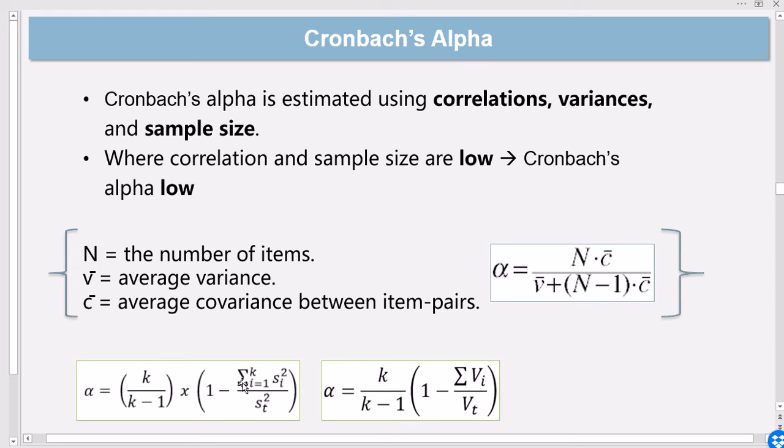You can also represent it in a different way, as has been represented here, which is k—the number of items—times k over k minus one times one minus the summation of standard deviations squared over the variance for the test.